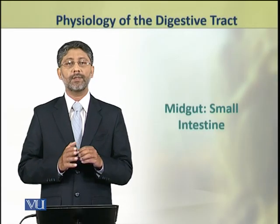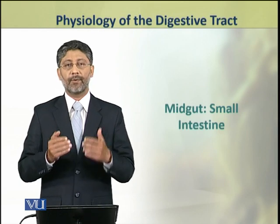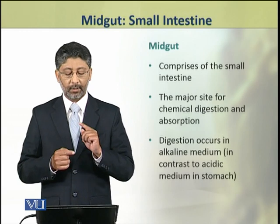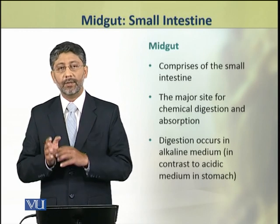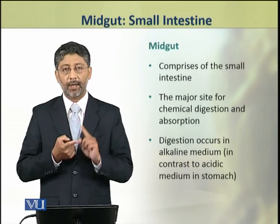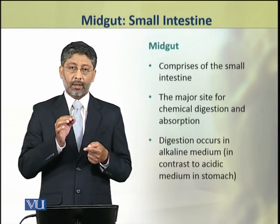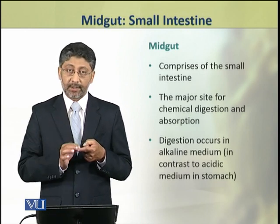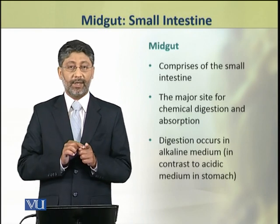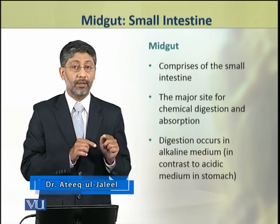Dear students, in this topic we shall discuss the meat gut, which comprises of the small intestine. Small intestine is the major site for the chemical digestion and absorption of the digested food products. In the intestine, digestion takes place in alkaline medium, in comparison to the acidic medium present in the stomach.